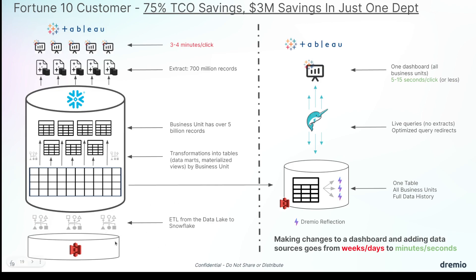They would ETL their data from their data lake into Snowflake, paying for the ETL and egress costs. Then from Snowflake, they were generating not just the initial copy of data but also building physical data marts for different business lines — creating multiple copies of that data in different variations that had to be kept in sync. Processing over five billion records, and on top of that, making dashboards performant required several external extracts for 700 million records, resulting in BI dashboards that took three to four minutes to update with every interaction.